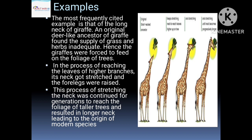The most frequently cited example is the giraffe. An original deer-like ancestor of the giraffe found the supply of grass and herbs on the ground inadequate, so giraffes were forced to feed on the foliage of trees. The giraffe's ancestor was actually deer-like, eating grass from the ground, with a short neck and shorter forelimbs. When environmental conditions changed, the grass on the ground was exhausted.